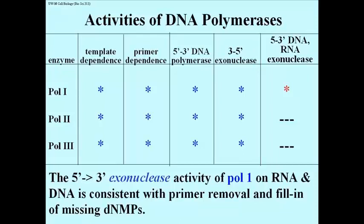An exonuclease is simply an enzyme that catalyzes the hydrolysis of nucleotides from one or the other end of a DNA or RNA molecule. An endonuclease would be an enzyme that catalyzes the hydrolysis of a phosphodiester bond somewhere within a DNA or an RNA strand, and we know both kinds of activities.